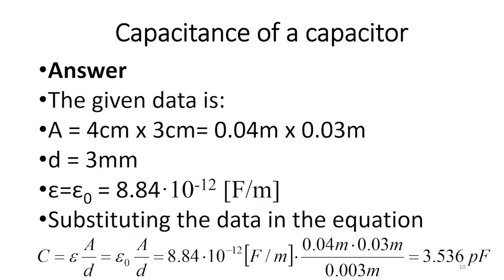Substituting the data in the equation, C equals epsilon times A divided by D equals epsilon zero times A divided by D. And in this case is 8.84 times 10 to the power of minus 12 times 0.04 times 0.03 divided by 0.003. And the result is 3.536 picofarad.